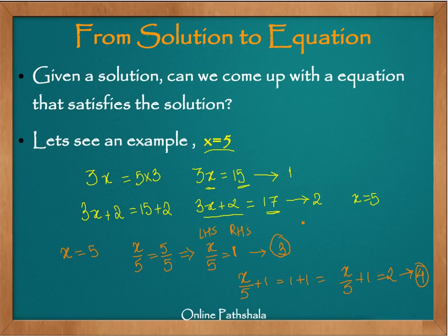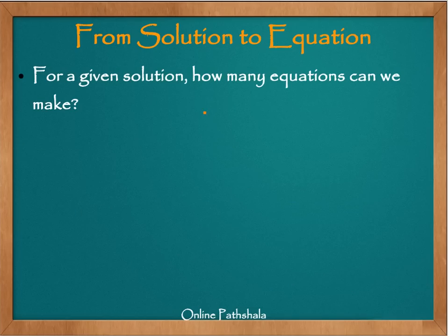So now if you ponder upon this a bit and ask yourself this question: if we have a solution, how many equations can we really make? In fact, you can make a huge number of equations from a given solution. So for example, we saw that x equals 5, which was our last example, saying that this x equals 5 is a solution. We at least made 4 equations straight away which satisfy the solution of x being equal to 5. Therefore, for a given solution, you can have infinite equations which satisfy that value.